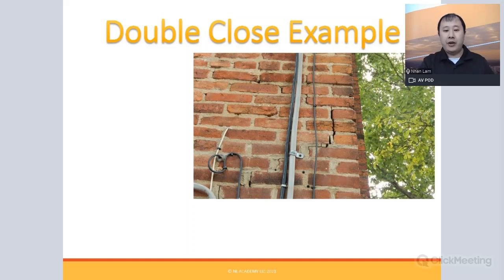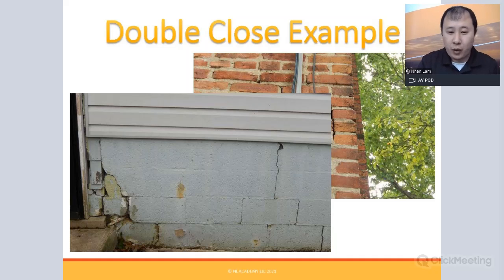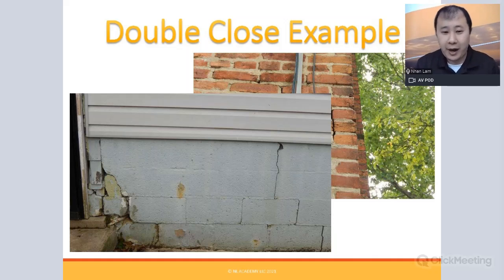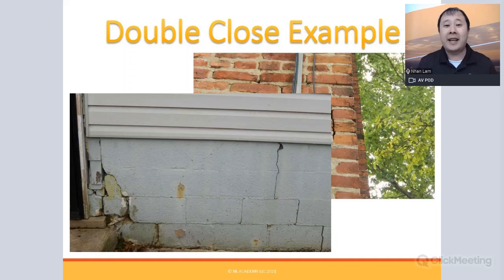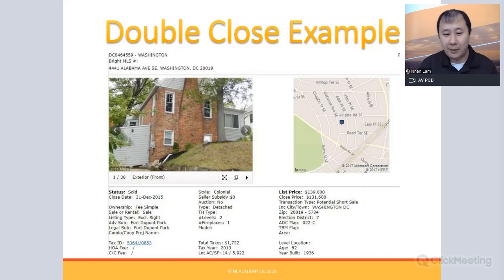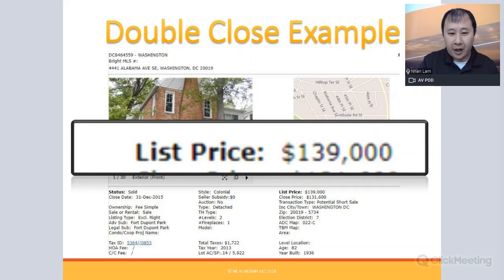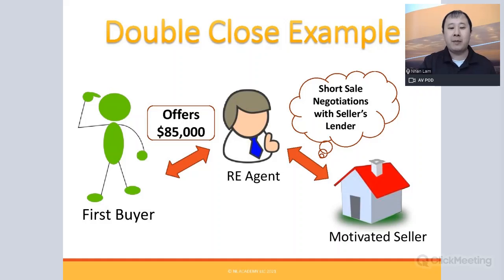Here's a double close example in Southeast DC. The property had significant foundation cracks throughout. I'm an engineer but not a structural engineer, so I couldn't determine which cracks were structural — but anytime buyers see foundation cracks, they get scared, and those pictures become valuable negotiating points. The MLS asking price was $139,000.